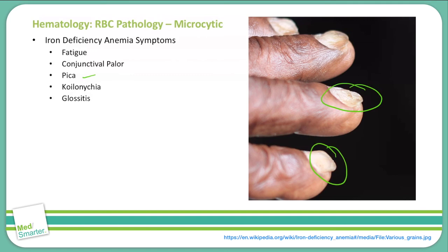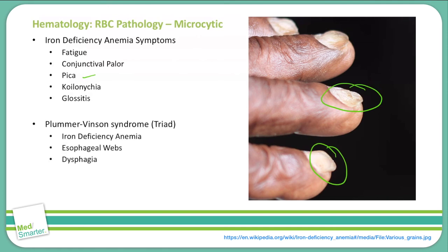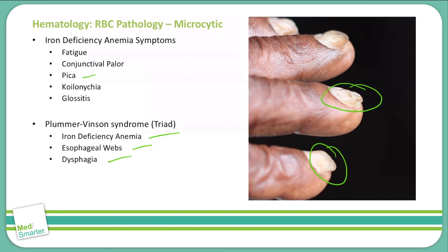Iron deficiency anemia is also seen along with a triad of symptoms in Plummer-Vinson syndrome. In Plummer-Vinson syndrome, you get iron deficiency anemia, esophageal webs, and dysphagia. This is a very rare syndrome, but the USMLE does love these types of questions because they are very specific. So be very aware of the Plummer-Vinson syndrome triad.